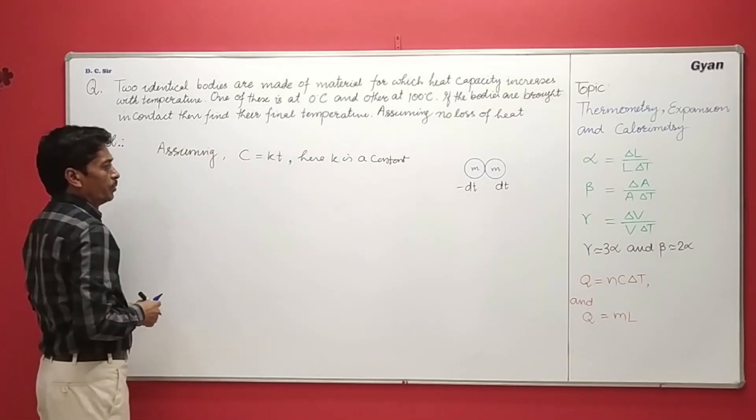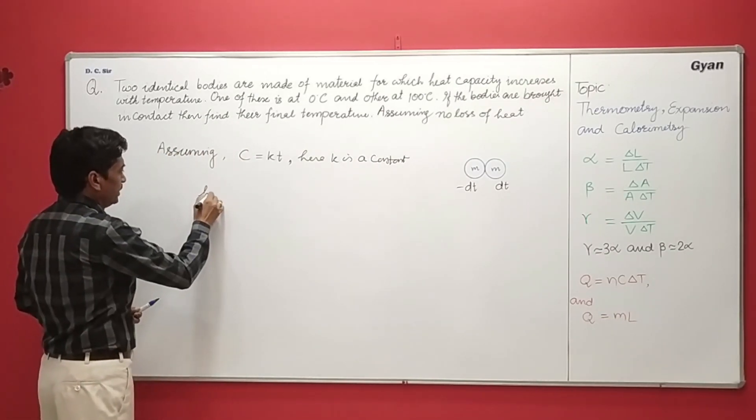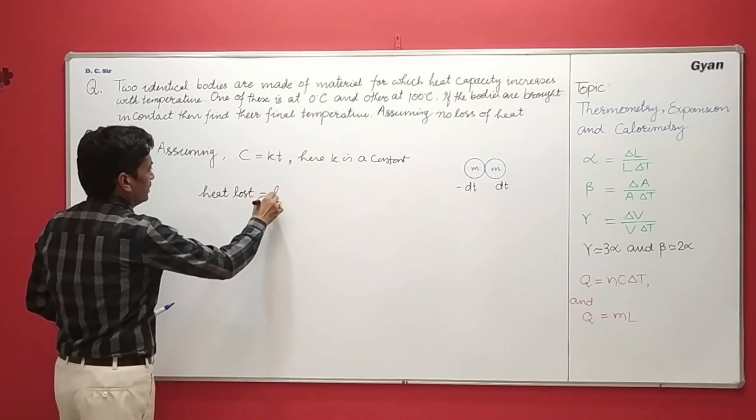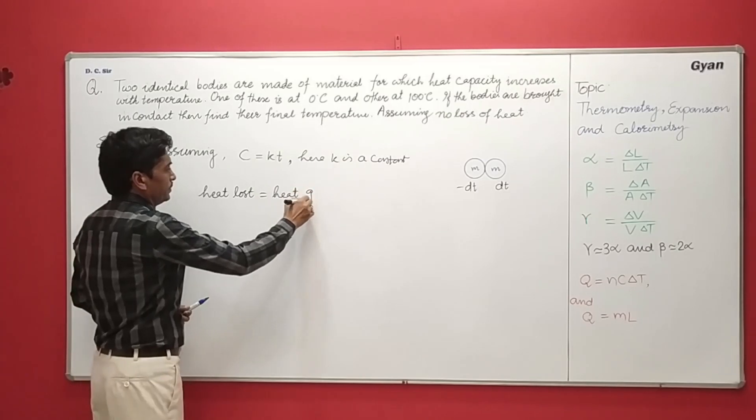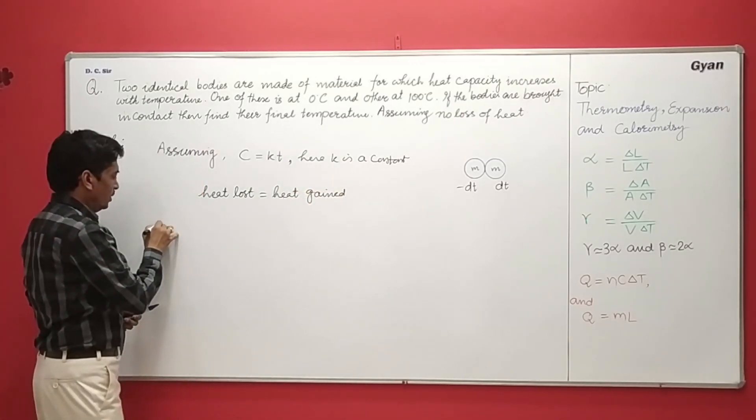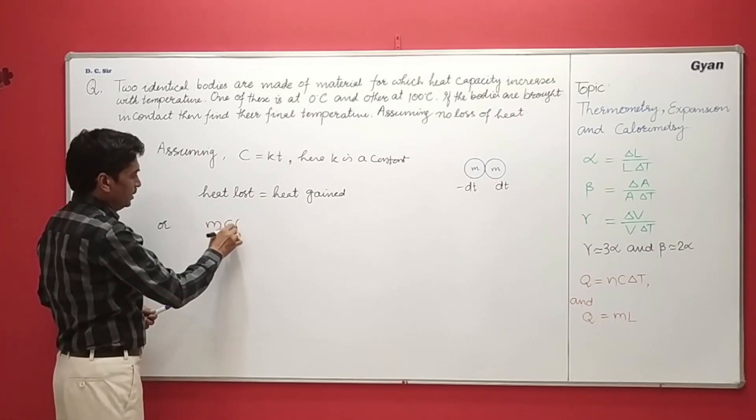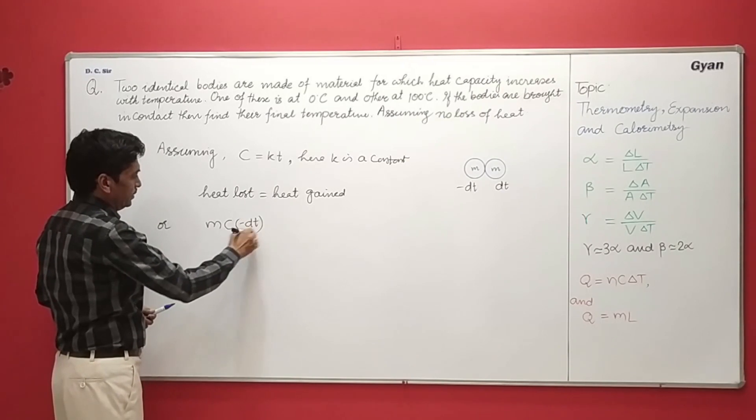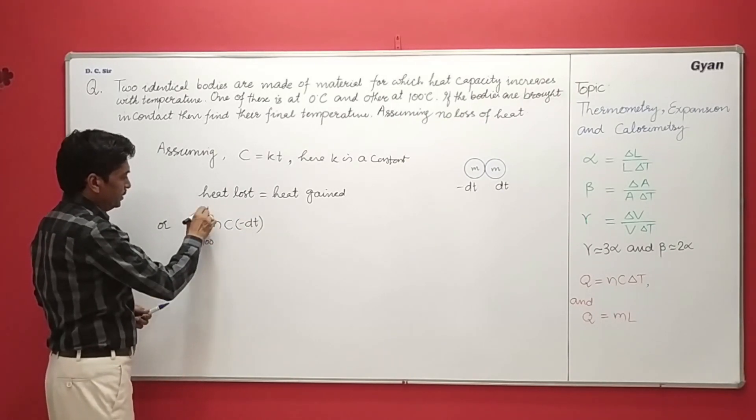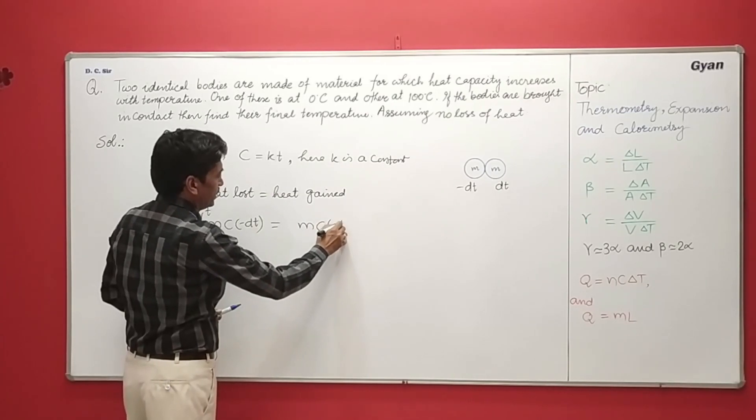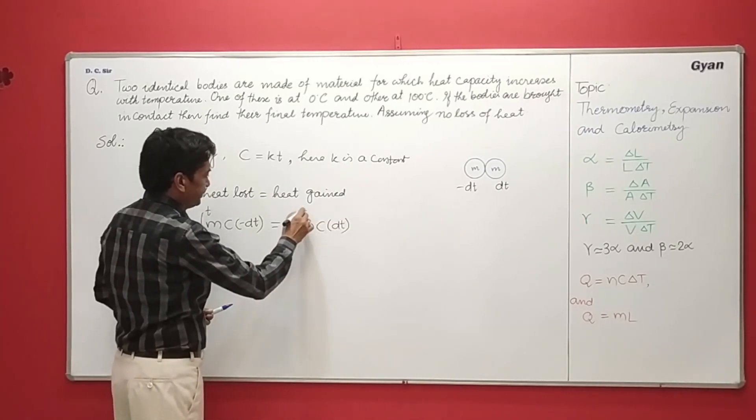Now using principle of calorimetry, that is heat loss is equal to heat gain. We have here M, C, minus DT from 100 to T and here it is M, C, DT from 0 to T.